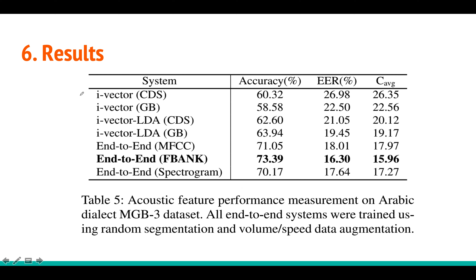Comparing baseline and end-to-end models: i-vector with cosine distance gives 60%, with Gaussian backend gives 58%, with LDA+cosine gives 62%, and LDA+Gaussian backend improves further. End-to-end with MFCC achieves 71% — a very large improvement. End-to-end with FBank is around 10% better than i-vector with Gaussian backend. Spectrogram gives 70%. The best single model is end-to-end with FBank features.